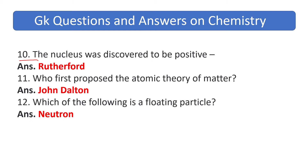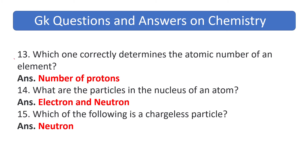The nucleus was discovered to be positive by Rutherford. Who first proposed the atomic theory of matter? The answer is John Dalton. Which of the following is a floating particle? The answer is neutron. Which correctly determines the atomic number of an element? The answer is the number of protons.